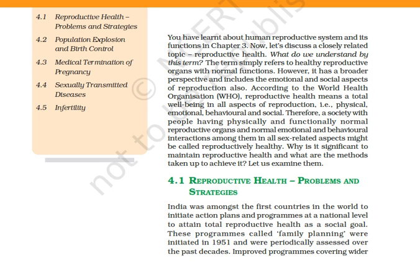India is one of the first countries to initiate programs to achieve total reproductive health — one is family planning and another is reproductive and child health care. The family planning program was initiated in 1951 at the national level and is periodically assessed with new strategies planned to make it successful. One of its campaigns is educating people about the advantages of having a small family so that parents can look after children well and provide them the necessities to run their lives smoothly.